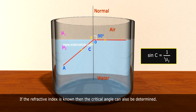If the refractive index is known, then the critical angle can also be determined.